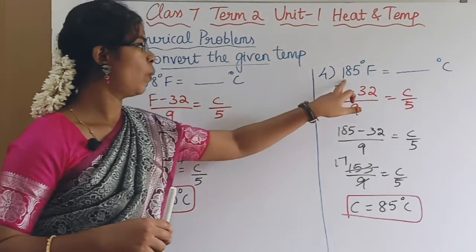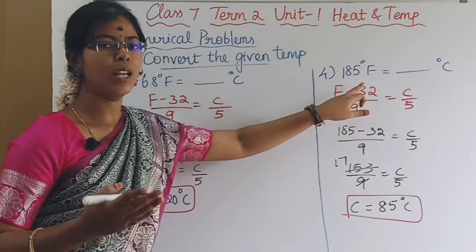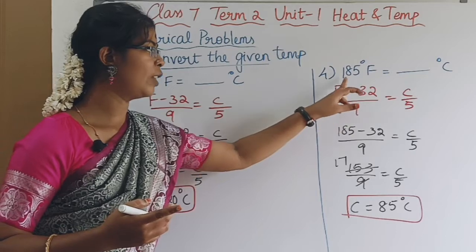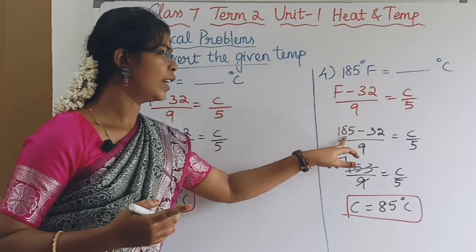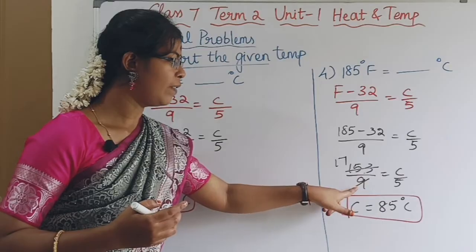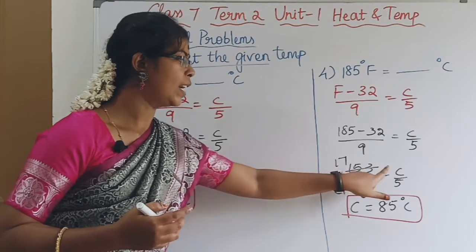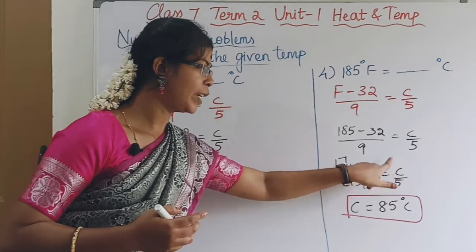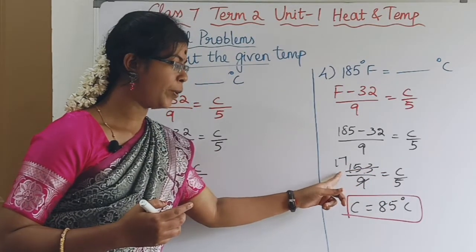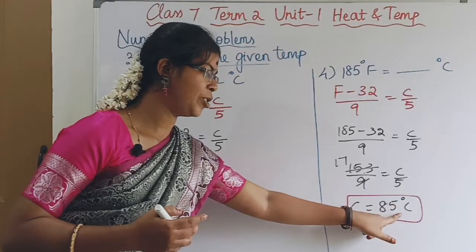Fourth, convert 185 degrees Fahrenheit to Celsius. Substituting F = 185 into (F - 32) / 9 = C / 5: (185 - 32) = 153, so 153 / 9 = 17. Multiplying by 5 gives C = 85 degrees Celsius.